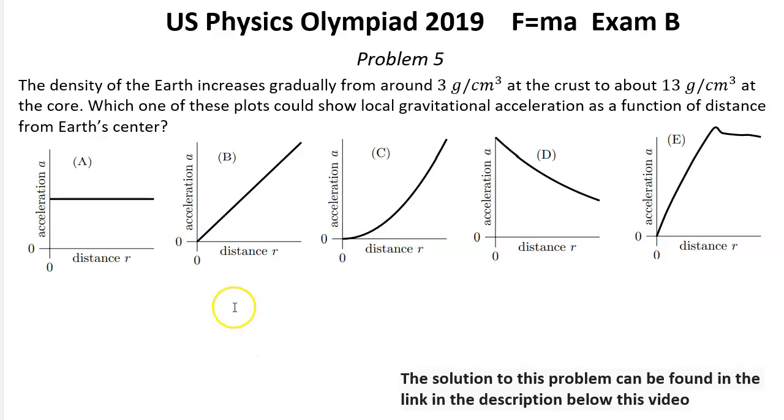This means that choice B is for a constant density planet. But in case of earth, density decreases with r. We know that mass m grows more slowly. It means that acceleration must grow more slowly than linearly.